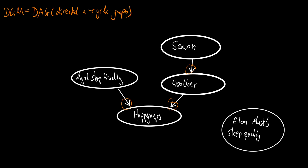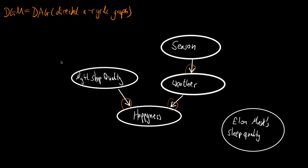This particular example is about happiness. We are asking what is affecting our happiness. For simplicity, we say night sleep quality is affecting it and the weather is affecting it. And the weather itself is again affected by the season. So we have the dependency going from the season to the weather, and the arrow indicates this conditional dependence. And we can then start to build a factorization.